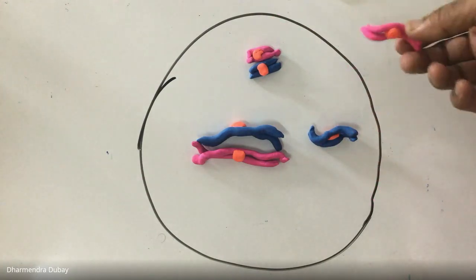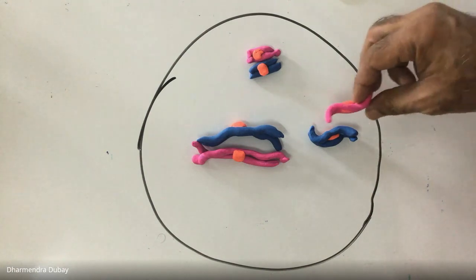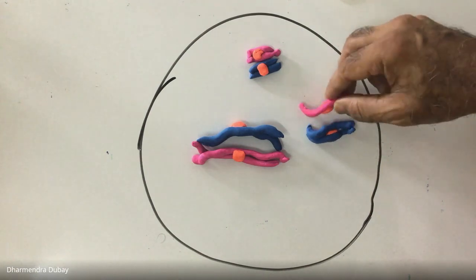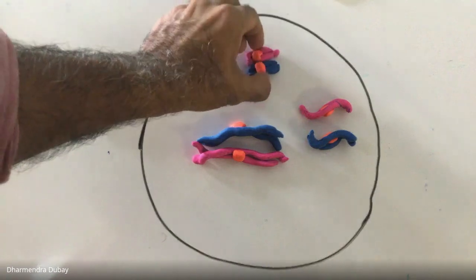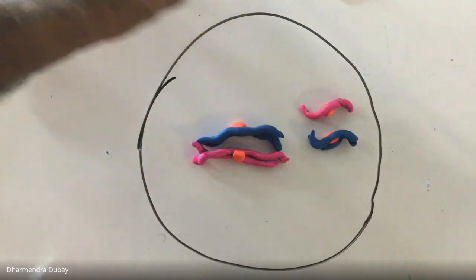They could assort independently, but even before that assortment happens there is a very big and significant source of genetic variation. I'll just use this biggest chromosome here as my model to explain that.